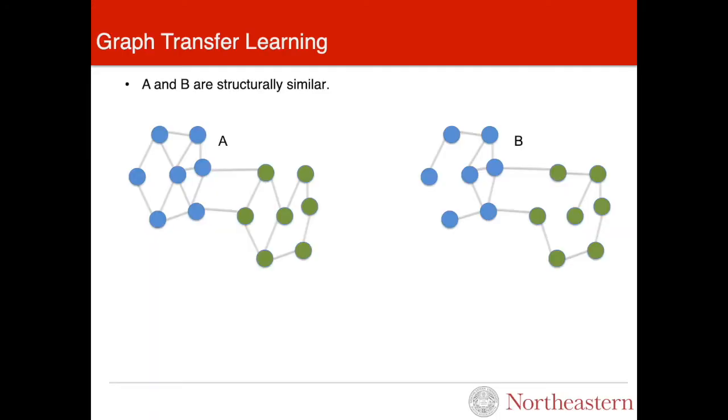Let me start with the problem of Graph Transfer Learning. Suppose we have two graphs, A and B, with similar structure.